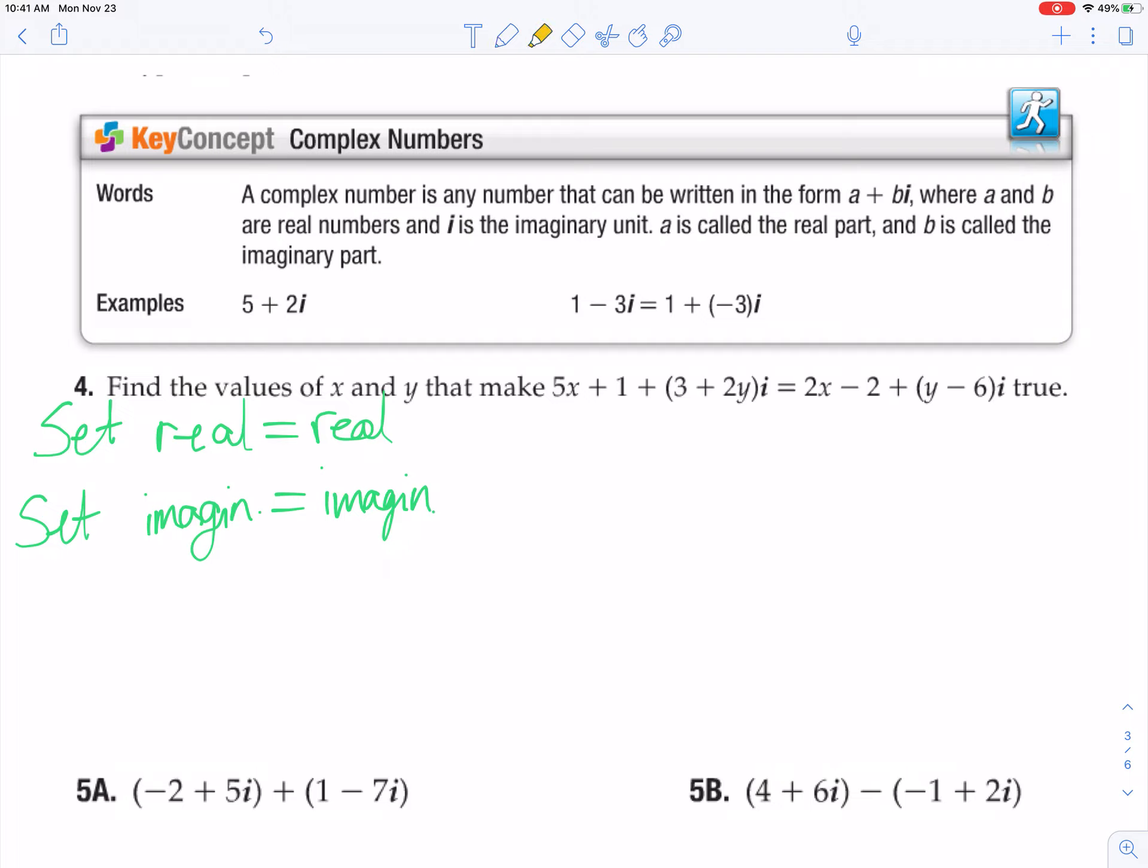So when I look up here, the real stuff is anything that doesn't have an i immediately connected to it. So when I look at what has an i, this i is multiplying the parentheses. So that's the imaginary stuff. Okay, more imaginary stuff right there. And then here is the real then. So make two equations from that.